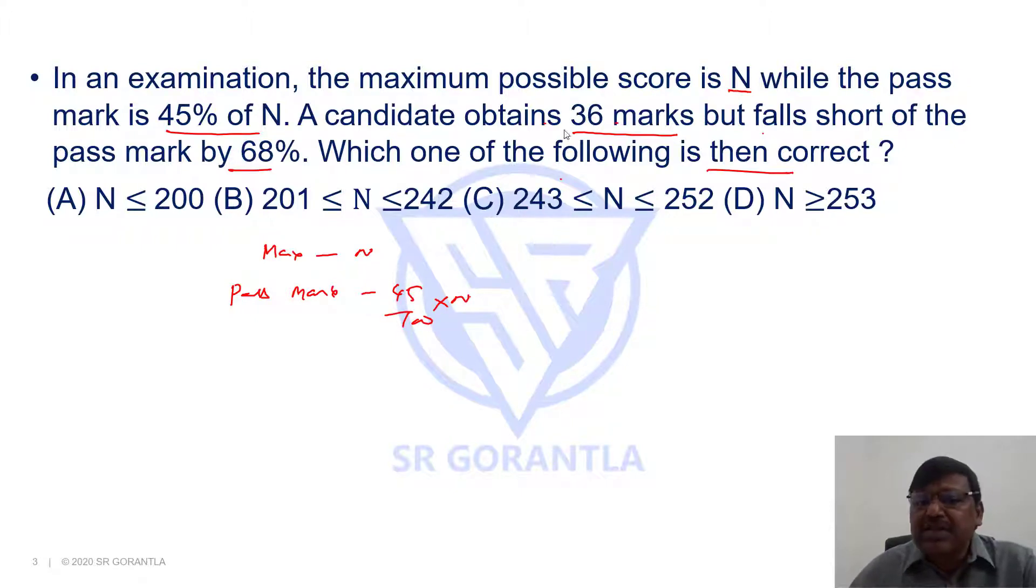A candidate obtains 36 marks but what is this 36 marks? The candidate falls short of the pass mark by 68%. If the candidate falls short by 68%, the candidate obtains only 32% of the pass mark.